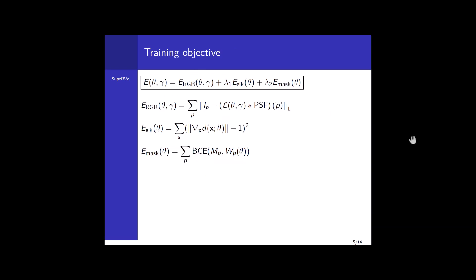Finally, our training objective is as follows. We consider a data term E_RGB which penalizes the discrepancy between the input image and the rendered images. Second, we have the eikonal term which ensures that our field D is indeed a signed distance field. Finally, we consider an optional mask loss used only if masks are available. It consists of the binary cross-entropy of the mask value at pixel P with the sum of the weights of the volume integral.